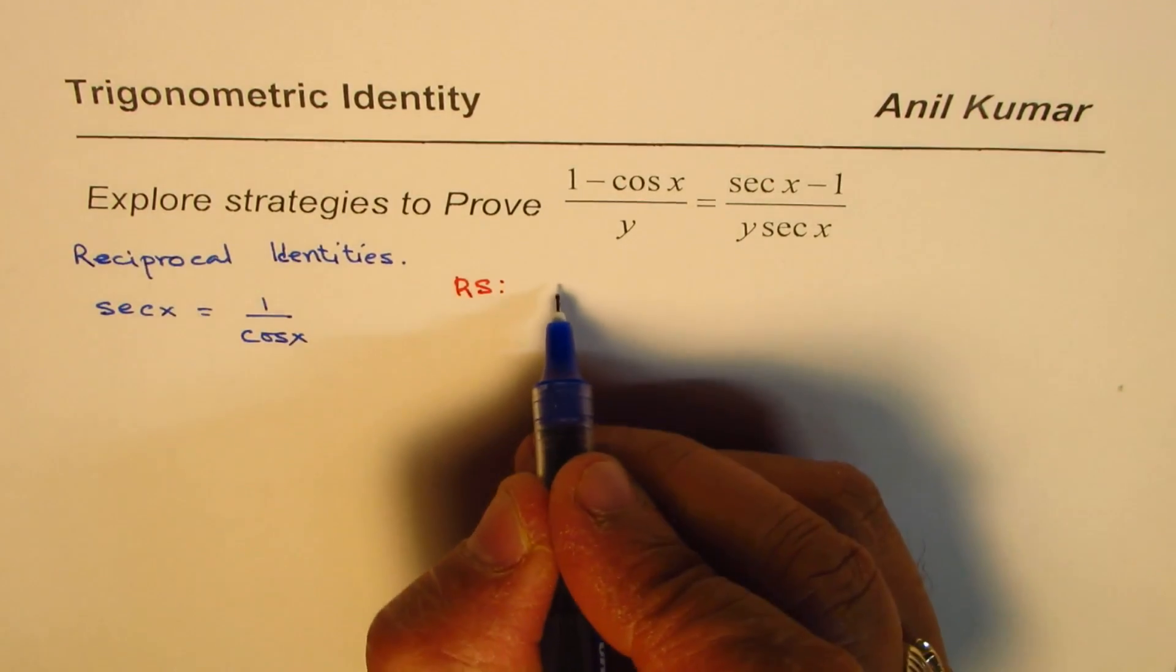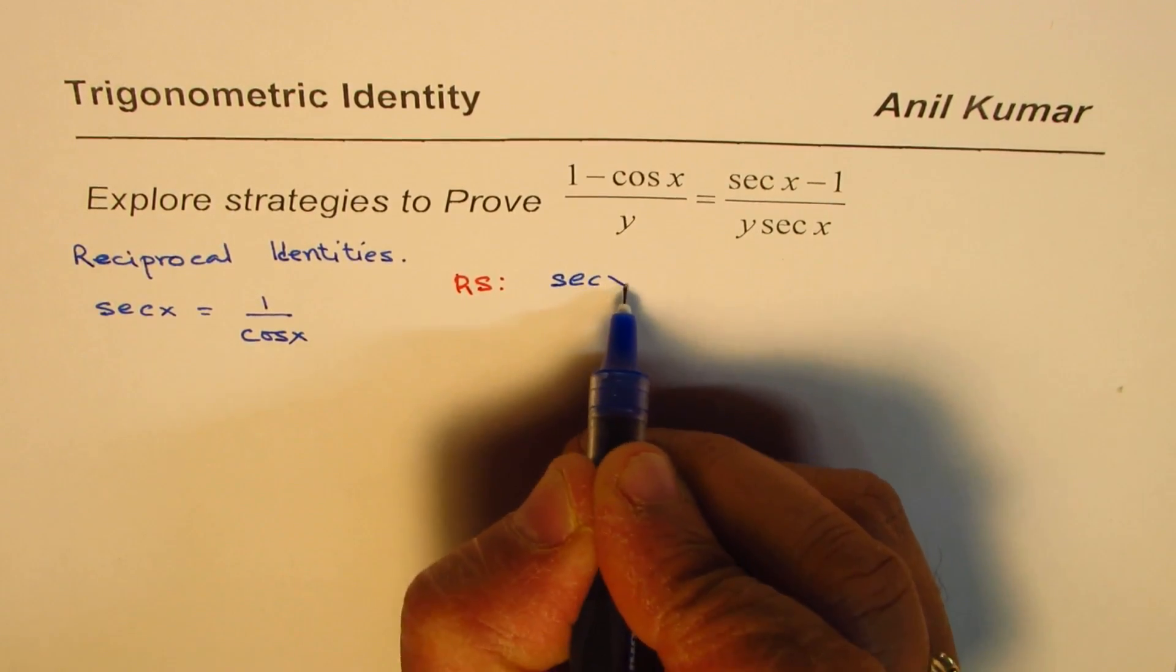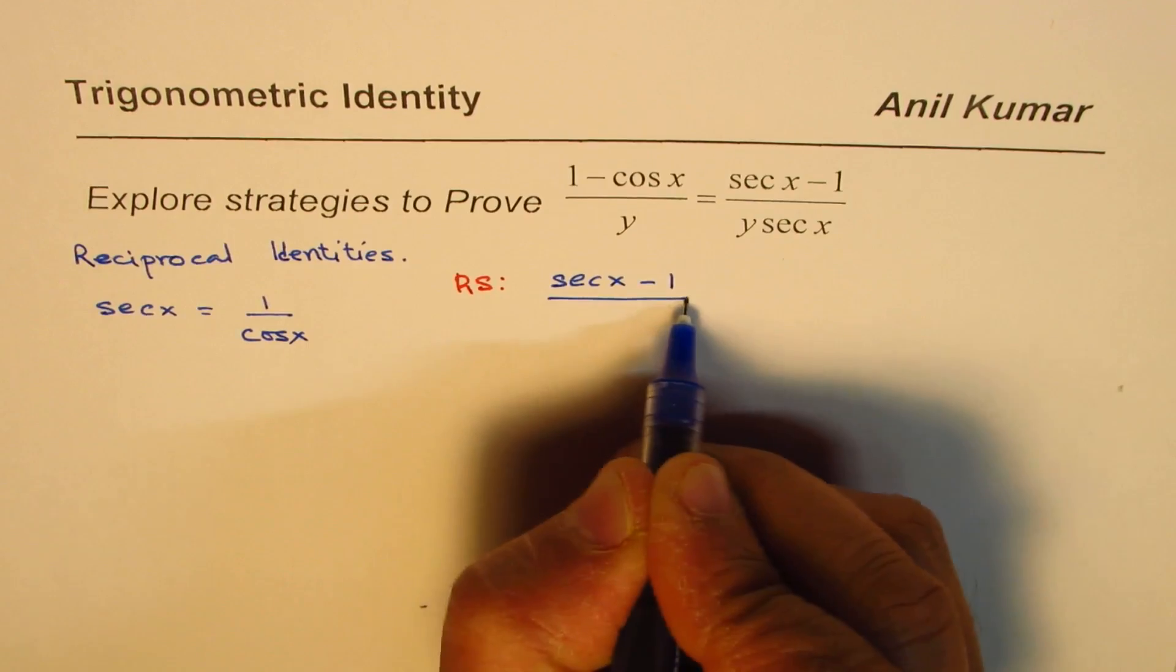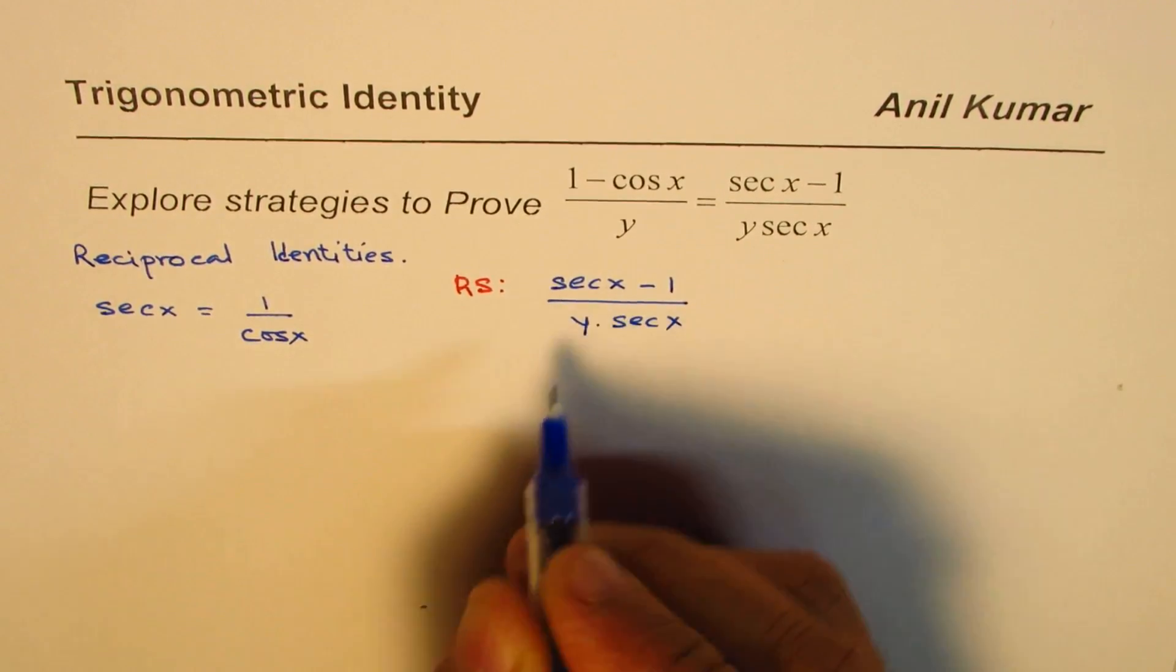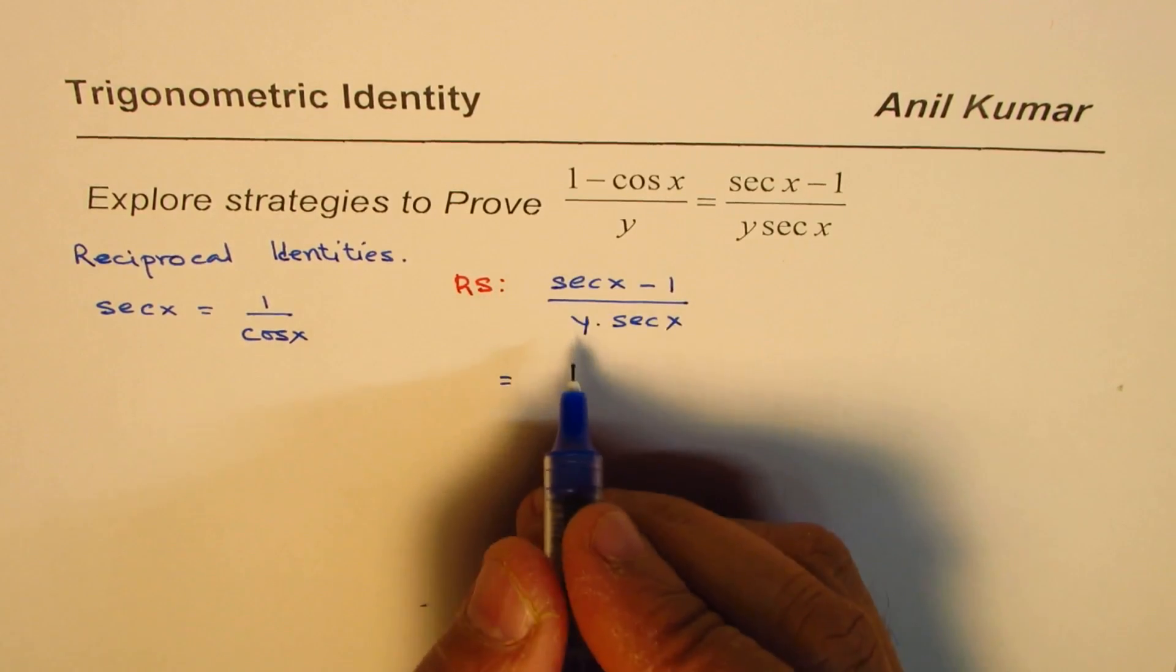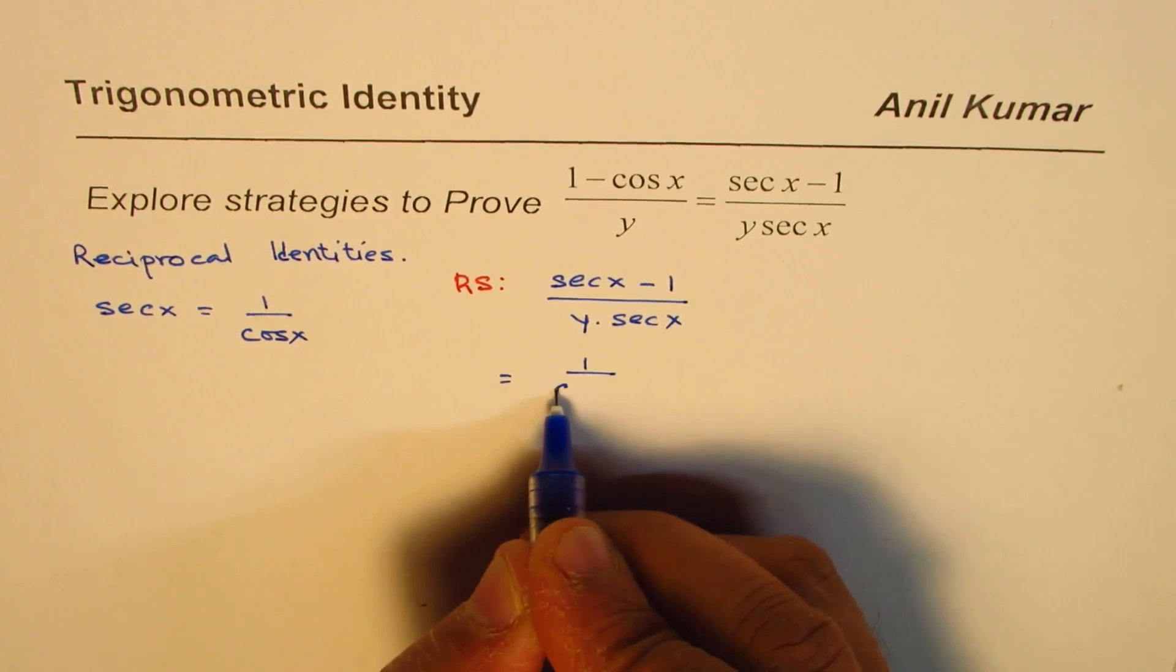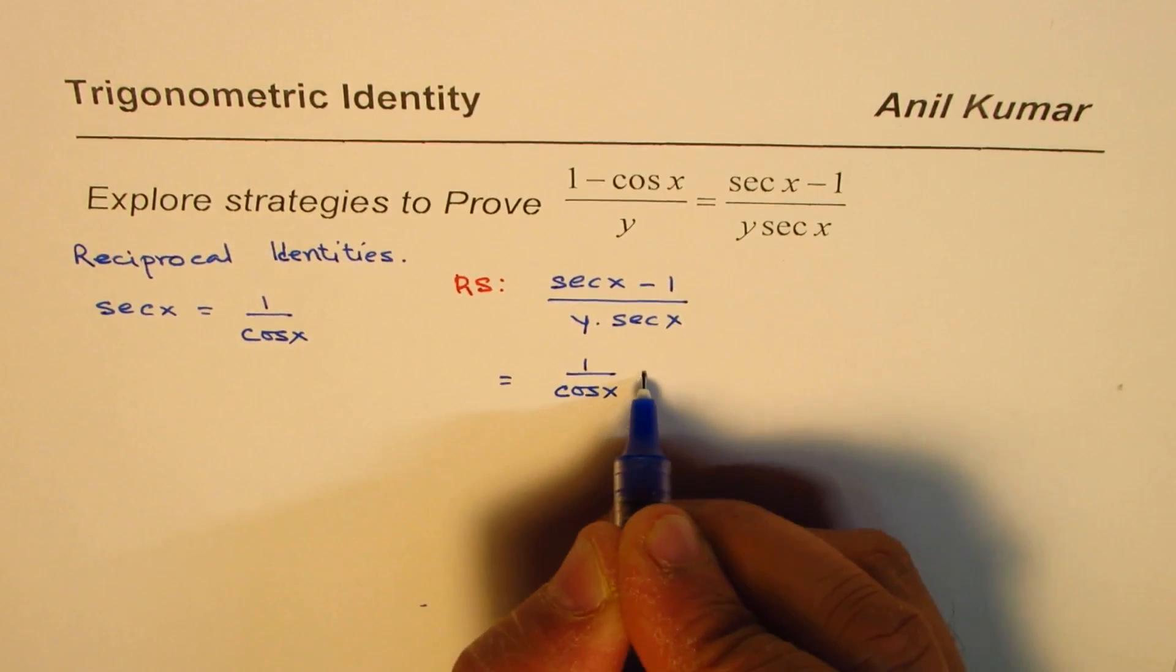The right side is given to us as (sec x - 1)/(y sec x). If I write sec x as 1/cos x, what do I get? I get (1/cos x - 1) divided by (y times 1/cos x).